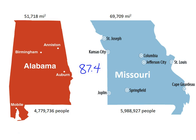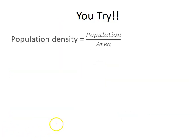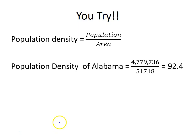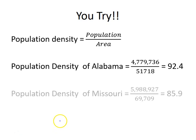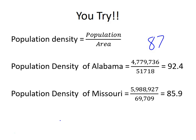We divide each state's population by its area. For Alabama: 4.7 million divided by 51,718, and for Missouri: 5.9 million divided by 69,709. We get a population density of 92.4 for Alabama and 85.9 for Missouri. We compare both of these to the national average of 87.4.